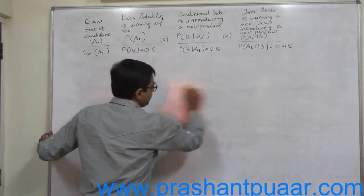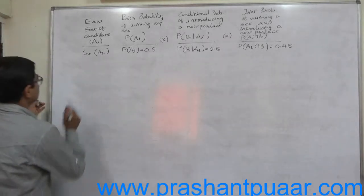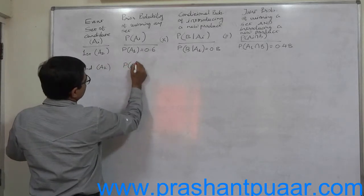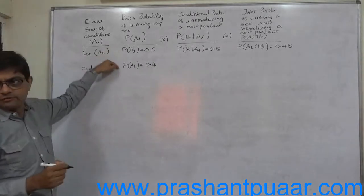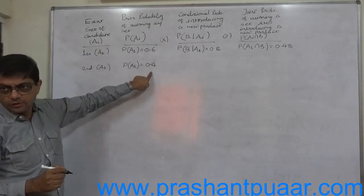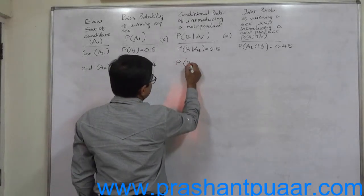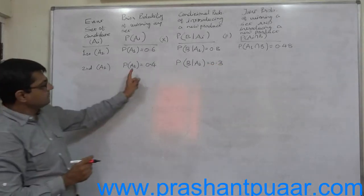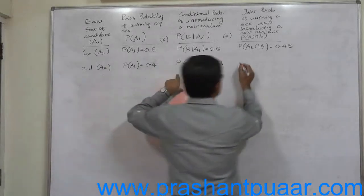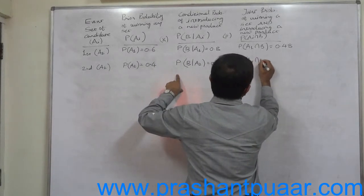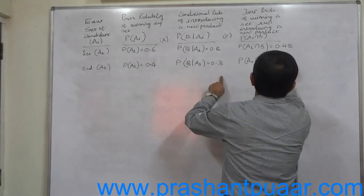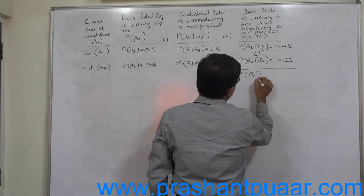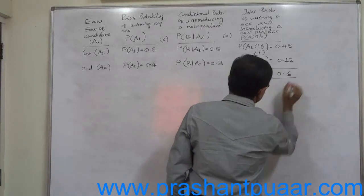Similarly for the second set A2: P(A2) = 0.4, since these are mutually exclusive and exhaustive events so totals come to 1. The conditional probability P(B|A2) = 0.3. Multiplication of these two gives P(A2 ∩ B) = 0.4 × 0.3 = 0.12. Addition of the joint probabilities gives the probability of B: P(B) = 0.48 + 0.12 = 0.60, or 60 percent.